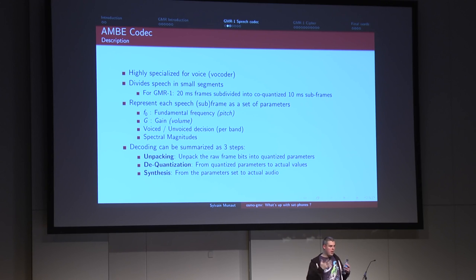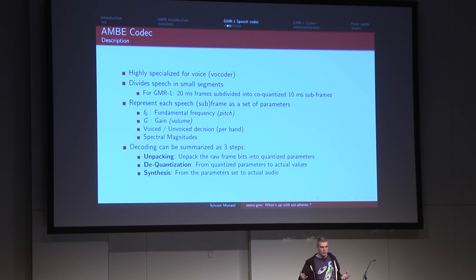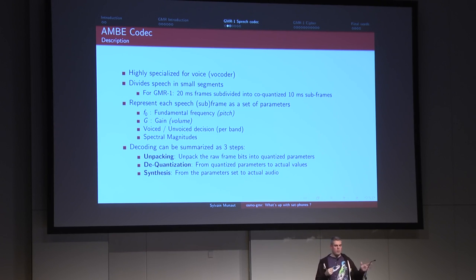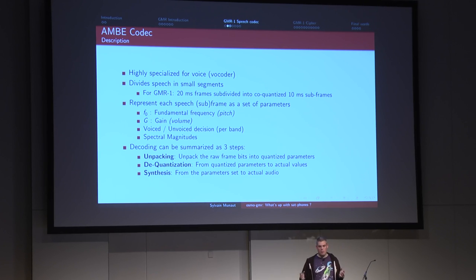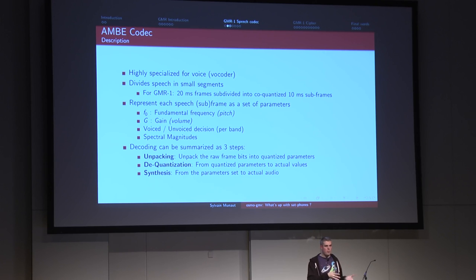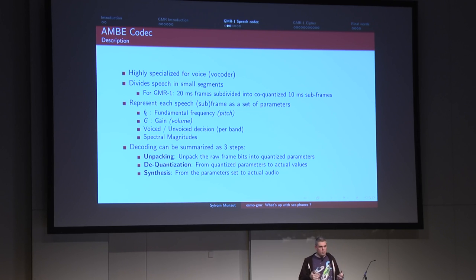To play back voice you need three steps: unpacking - taking the 80 bits of the voice frame and reconstructing quantized parameters. Not all bits are placed in order; some bits in a frame receive more error correction because they're more sensitive, so they're placed at specific positions to minimize impact of errors. The second step is dequantization - going from quantized compressed parameters into actual floating-point values representing the real parameters. The third step is synthesis - reconstructing actual audio from those parameters.